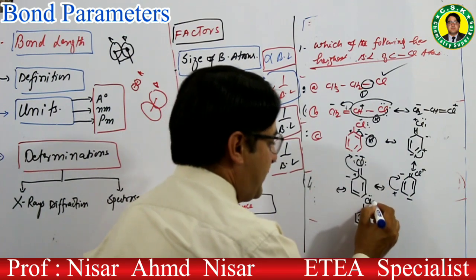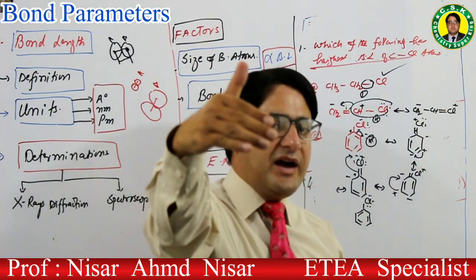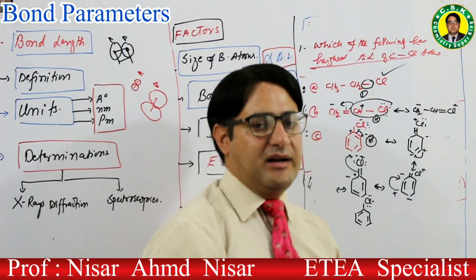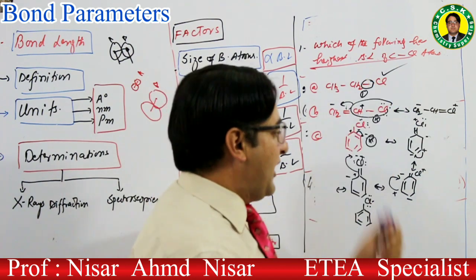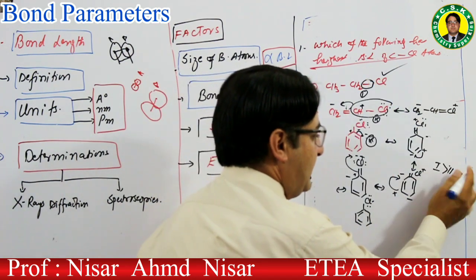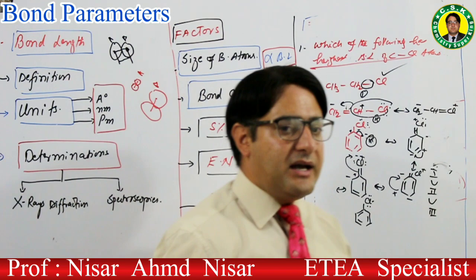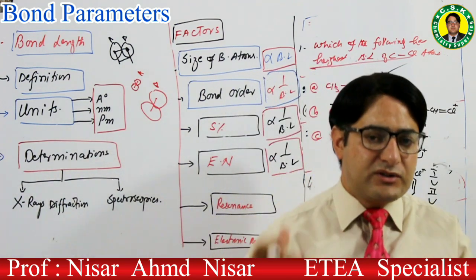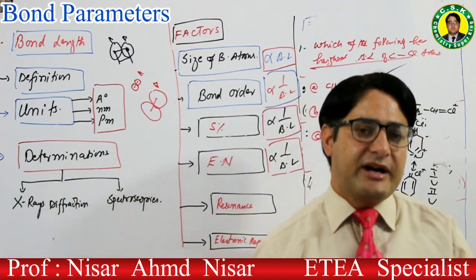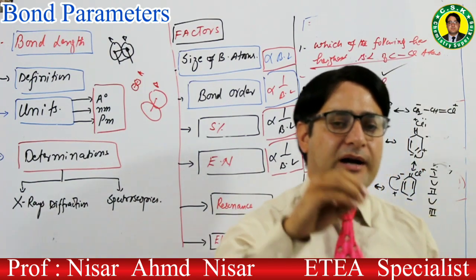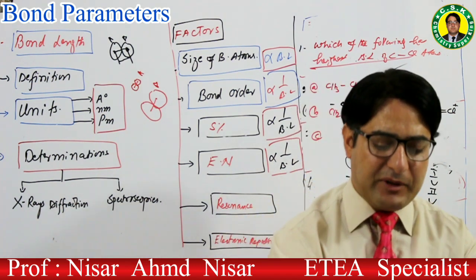Benzene ring میں 5 resonating structures ہیں — جتنی resonating structures زیادہ آئیں گی اتنا double bond کا character بڑھتا جائے گا، double bond کا character بڑھتا جائے گا تو bond length کم ہوتی جائے گی۔ سب سے زیادہ bond length compound 1 میں ہے، پھر compound 2 میں، پھر compound 3 — compound 3 کی C-Cl bond length سب سے کم ہے کیونکہ اس میں resonating structures زیادہ ہیں۔